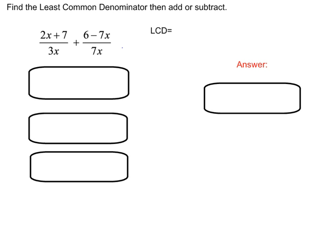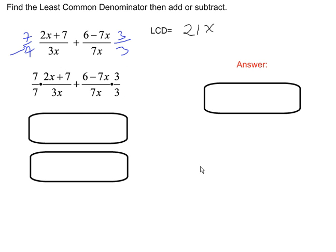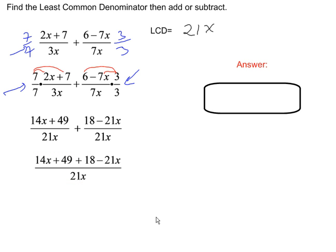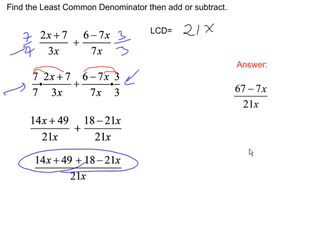Let's do a problem. With denominators 3x and 7x, the least common denominator is 21x. Multiply the first fraction by 7 over 7 and the second by 3 over 3. Remember to distribute: 7 to both terms, and 3 to both terms. That gives us 14x plus 49 in one numerator and 18 minus 21x in the other. Now combine the numerators and collect like terms. Our final answer is (67 minus 7x) all over 21x.